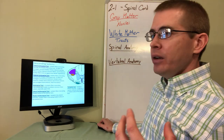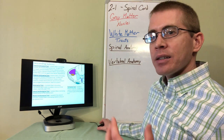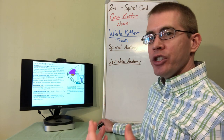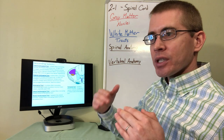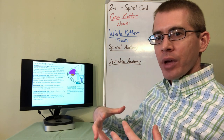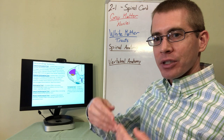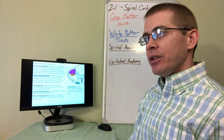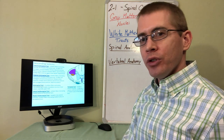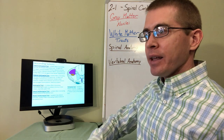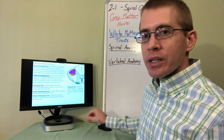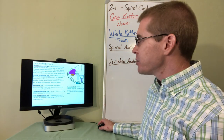By understanding how these different tracts have different functionality, you can start to diagnose individuals based on their motor movements or sensory impairments. As you build a mental catalog of this information and correlate the functionality of these different regions, you can test the strength of individual muscles to determine if there's weakness in different tracts or different locations in the spinal cord.